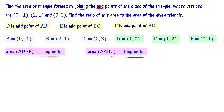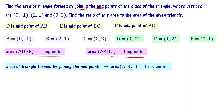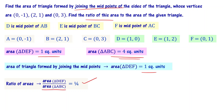Now we have both areas: the original triangle ABC has area 4 square units, and the midpoint triangle DEF has area 1 square unit. The ratio of area of triangle DEF to area of triangle ABC is 1/4, that is 1:4.